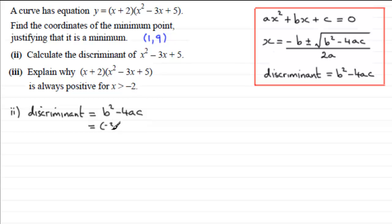Minus 4 multiply by a. a is the coefficient of x squared, which is 1, and c is the constant 5 in this case. So b squared minus 4ac, and if you work that out, we've got 9 minus 20, which is going to be minus 11.